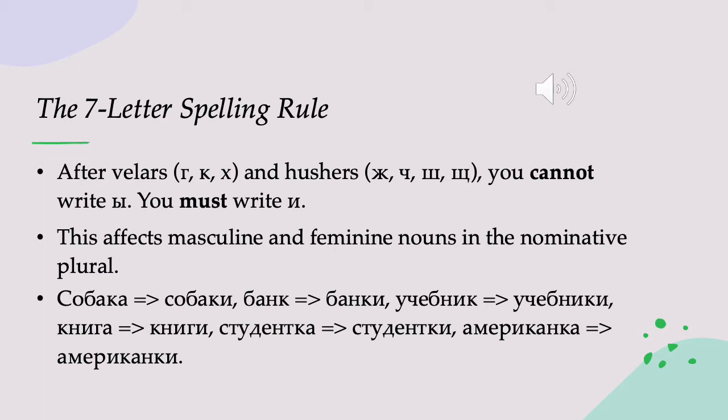Hushers are sounds that have a hushing sound in them. There are four or five of them in Russian. The letter Щ is not included in the seven-letter spelling rule but is included in another spelling rule — so it's sort of an honorary half-husher. The seven-letter spelling rule only cares about the fully-fledged hushers: ЖЖ, ЧЧ, ШШ, ЩЩ. So those are the seven letters: Г, К, Х, and ЖЖ, ЧЧ, ШШ, ЩЩ.